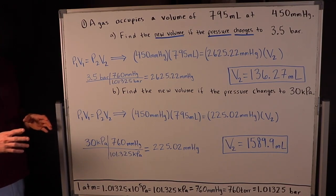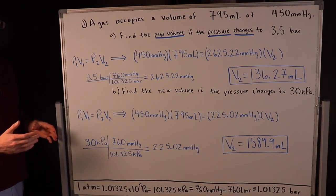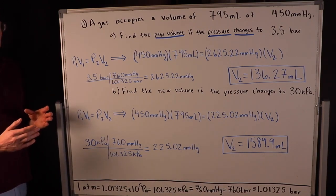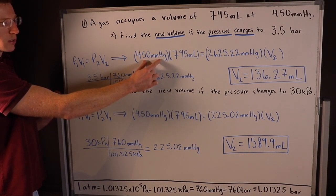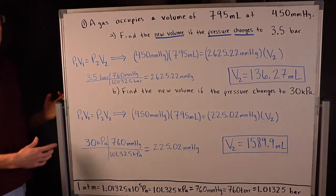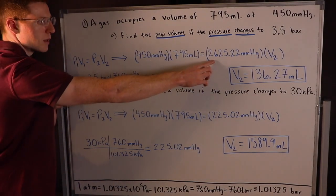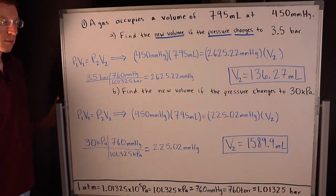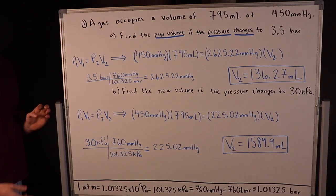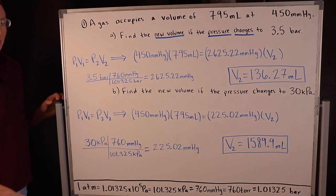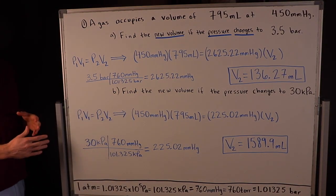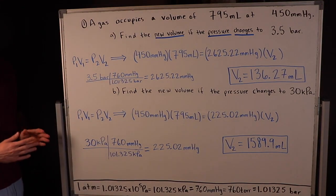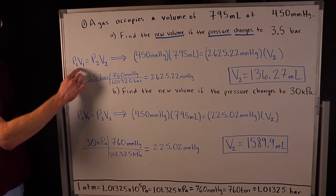Let's verify both answers. With Boyle's law, pressure and volume are inversely related — when pressure goes up, volume goes down. In Part A, pressure rose from 450 to 2625.22 mmHg, so volume should decrease: it went from 795 to 136.27 mL. In Part B, pressure fell from 450 to 225.02 mmHg, so volume should increase: it went from 795 to 1589.9 mL. Always check that your answer makes sense given what the law says.